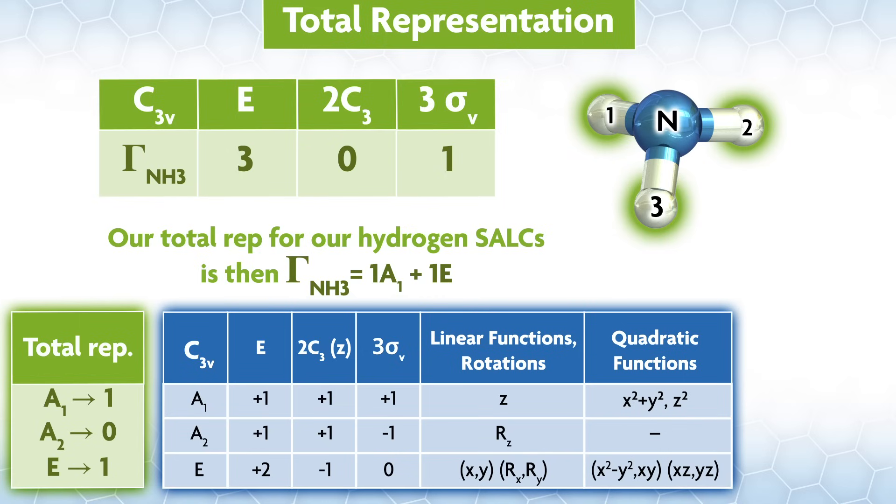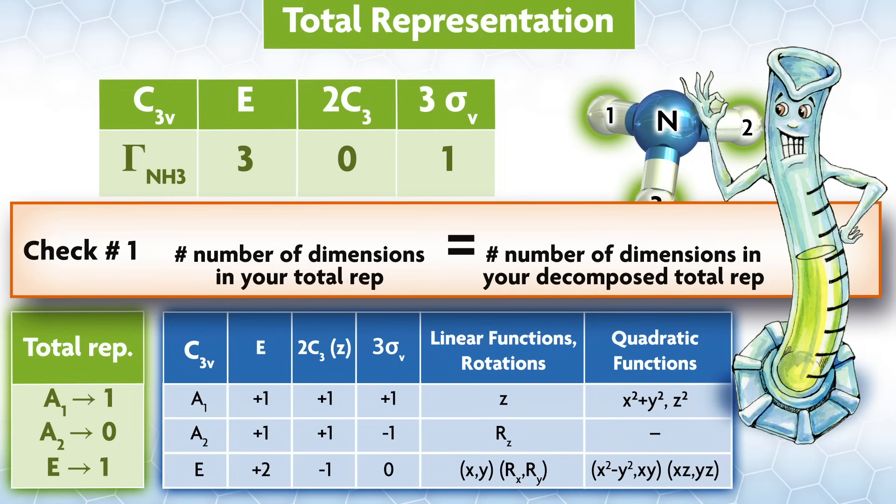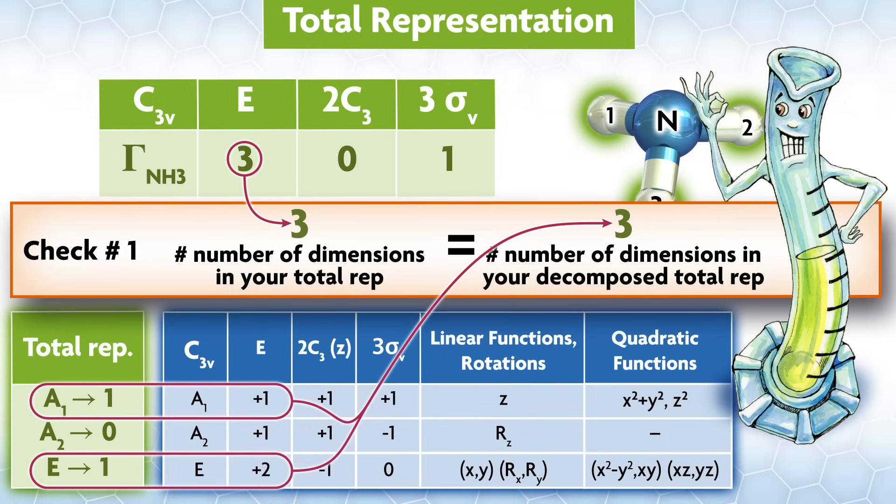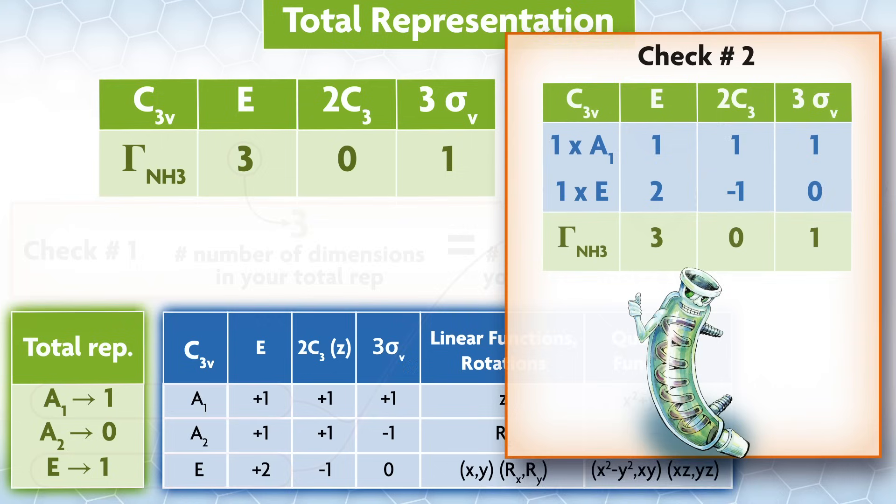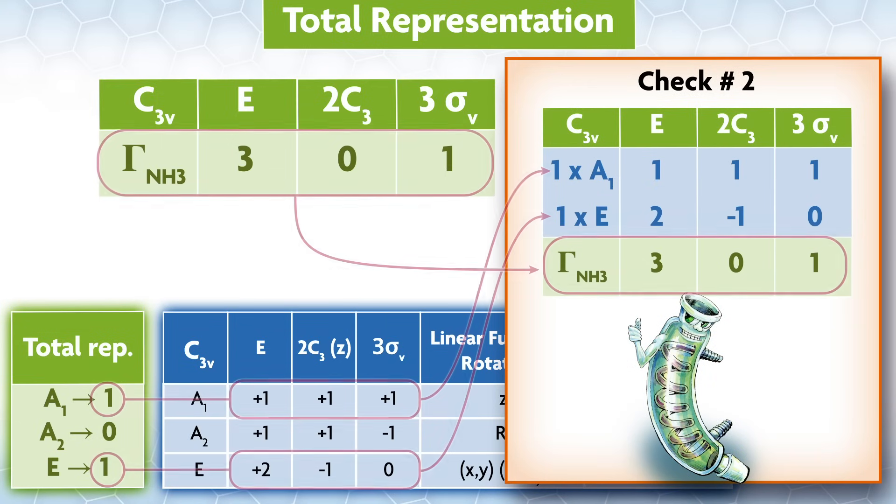There are two checks we can do to see if this is correct. First, the number of dimensions in our total rep should be the same as the number of dimensions after decomposition. We have 3 under identity for our total rep, so 3d. We have a 1d a1 and 2d e irreducible reps after decomposition, so 3d on both sides. The other check you can do is actually take the irreducible reps, multiply by the number of them in the total rep, and add them. You should get your total rep back, which works fine in our example.